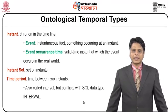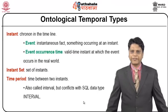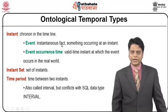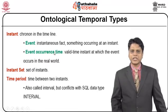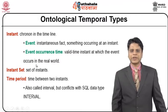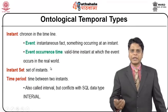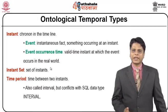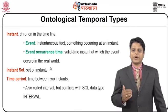There are certain ontological temporal types. Initially, we will define an instant — having defined a chronon in the timeline, an instant will have an event, which is nothing but an instantaneous fact. Any fact that has happened instantaneously we call that fact as an event. Something occurring at that instant we call as an event. Event occurrence time is the specific time when the event has happened — that is a valid time instant at which the event occurs in the real world. As we have distinguished between valid time and transaction time, event is a fact which has happened instantaneously, whereas event occurrence time is the valid time instant at which it has happened.